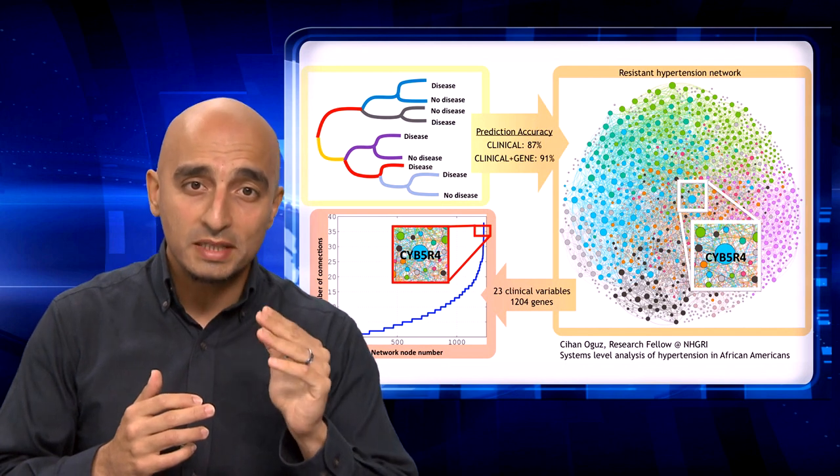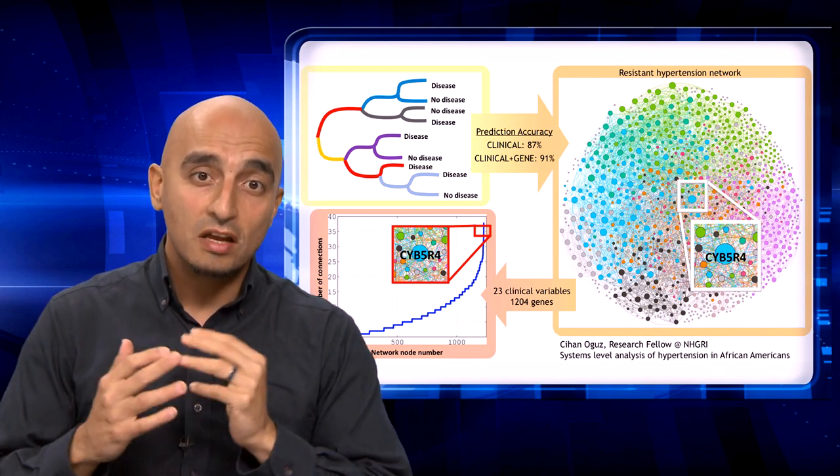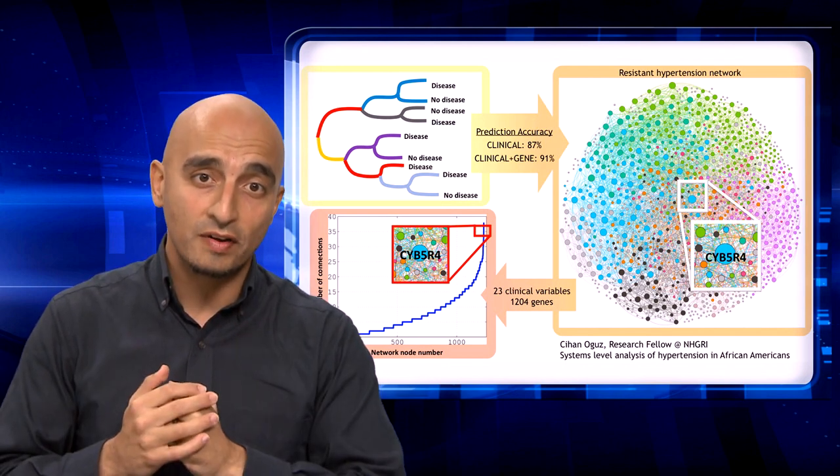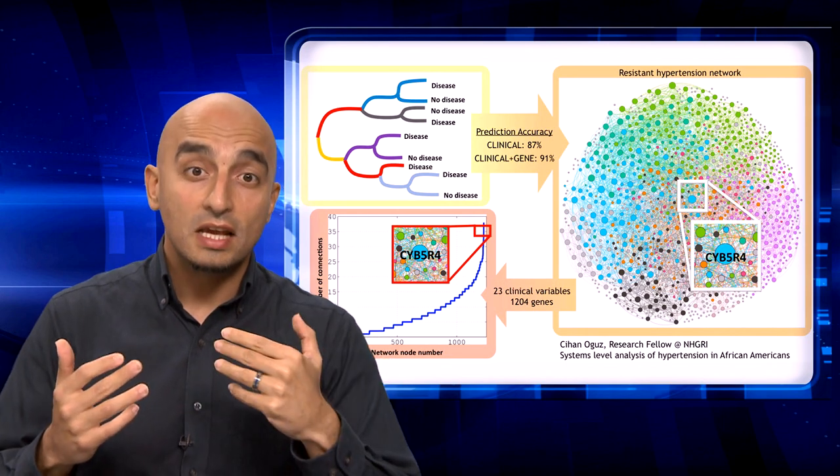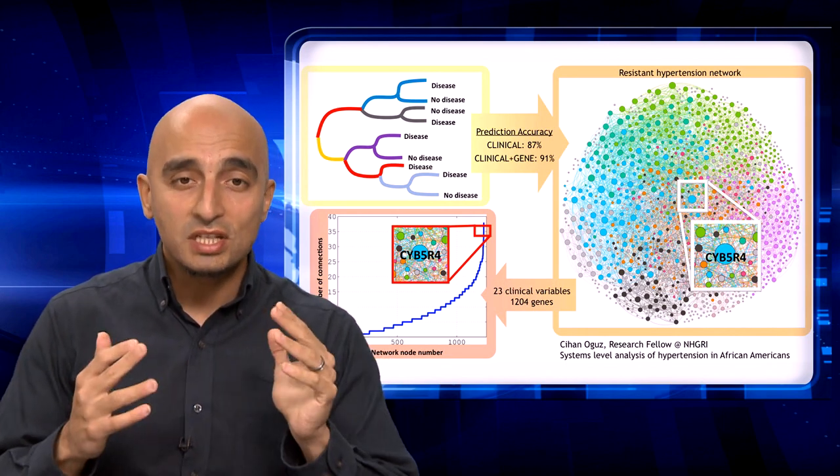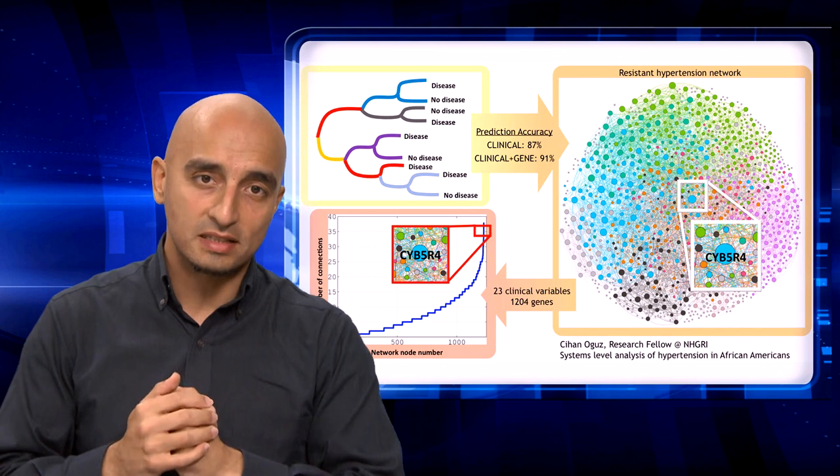My findings suggest that by perturbing the activity of CYP5R4, we can prevent some of the adverse effects of resistant hypertension, including organ damage, especially among people who are genetically susceptible.